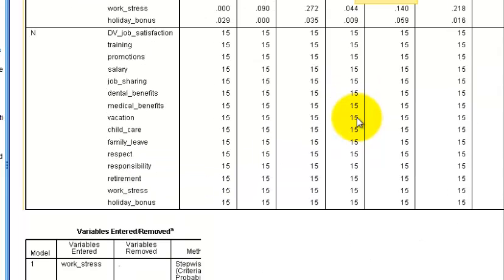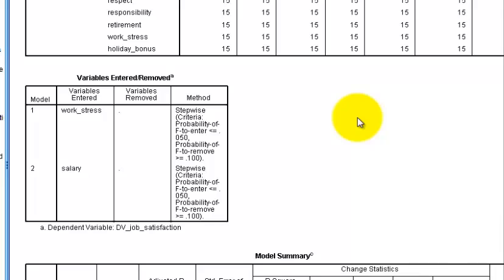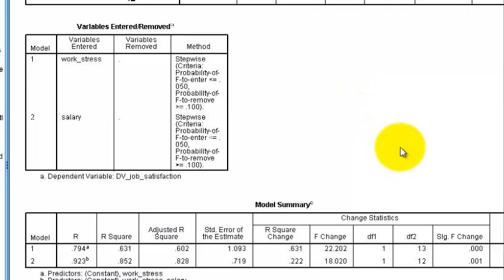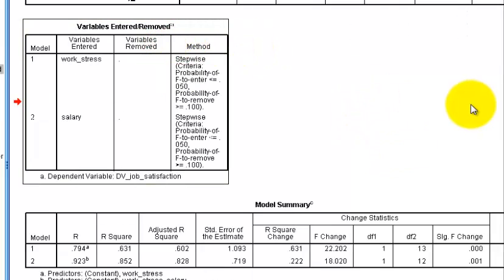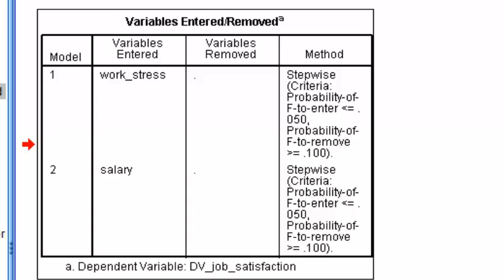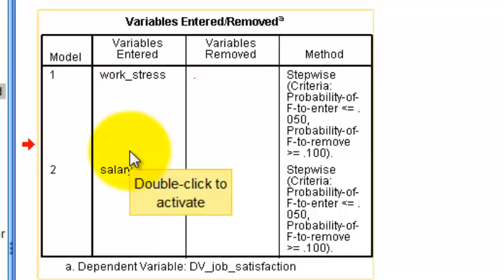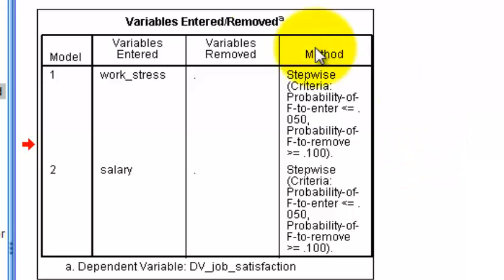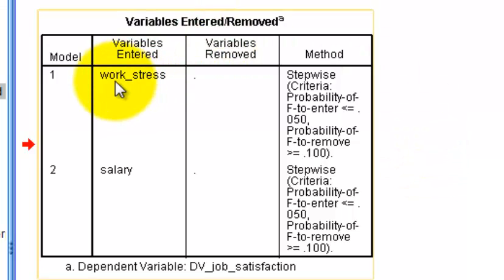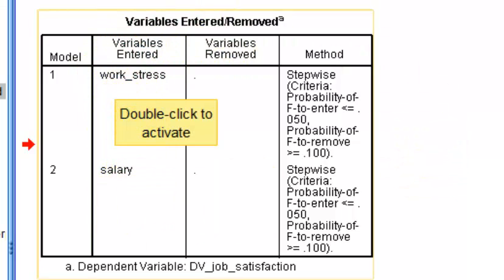And here is the money. According to the stepwise regression in SPSS, it says there are only two of the variables — two out of 14 — that are significantly affecting job satisfaction. The first one is work stress, and the second one is salary.